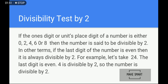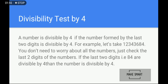For divisibility by 4: a number is divisible by 4 if the number formed by its last two digits is divisible by 4. For example, take the large number 1,234,368,4. You do not need to worry about all the digits — just check the last two digits, which are 84. Is 84 divisible by 4? Yes, it is. Therefore, the whole large number 1,234,368,4 is divisible by 4.